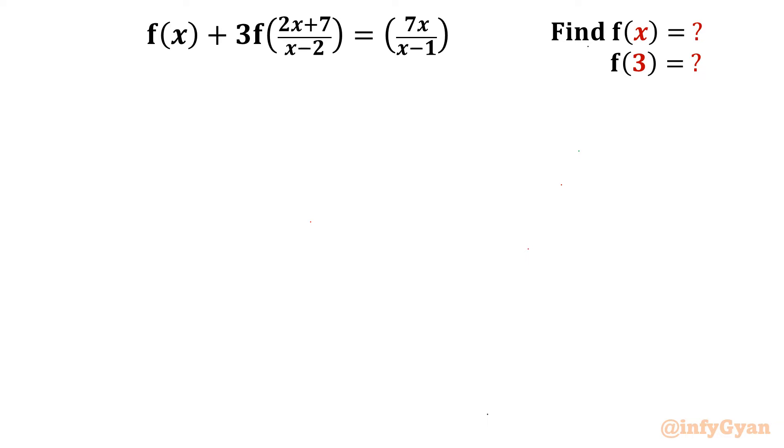I will solve this question using substitution. Just by observing the equation, you can conclude x cannot equal 2 as well as 1. This is what we know. Now we have to target f(x) first, so I will use substitution. I will give substitution (2x+7)/(x-2) as t. Let us put this equal to t.